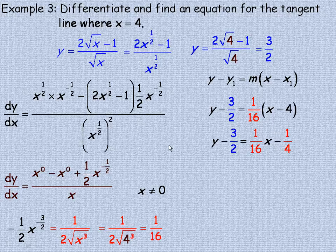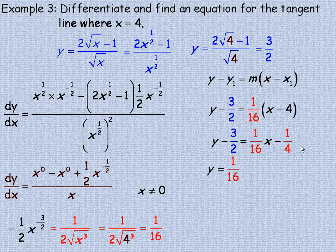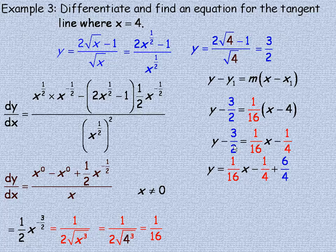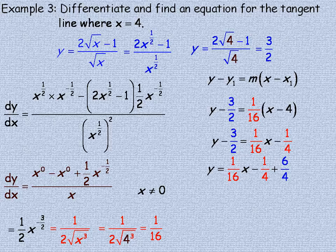Now I'm just going to leave it in y equals mx plus b form. So I'm going to bring this 3 halves over, and we'll be adding it to the negative 1 quarter. Now I want to get a common denominator. So the 3 halves, I multiplied it by 2, top and bottom, to get a common denominator.